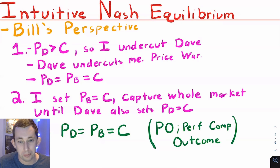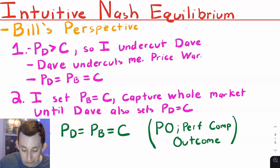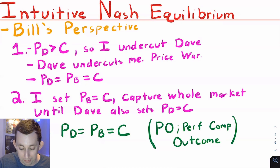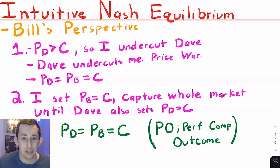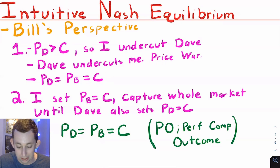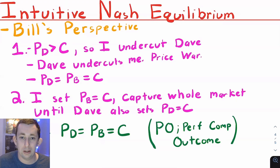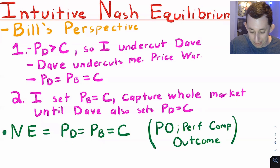When does the price war end? Neither Dave nor Bill wants to charge a price lower than their marginal cost, because then they'd be losing money on each unit — it would be better to sell nothing at all. So Bill is willing to go all the way down to his marginal cost, and so is Dave. Since they have the same marginal cost, we end up with both Bill and Dave charging their marginal cost. When firms charge marginal cost, we get a Pareto optimal outcome — the same outcome as in a perfectly competitive market. That is the Nash equilibrium.